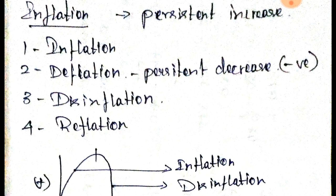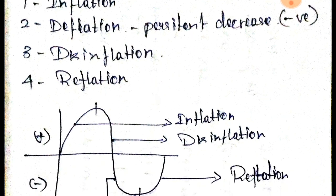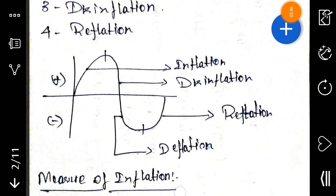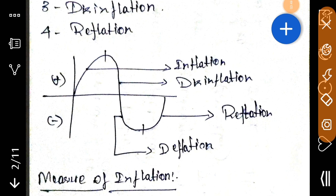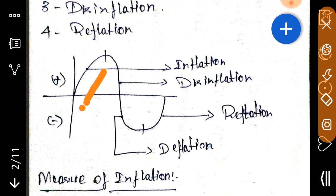This is our inflation economy — inflation and deflation. This is disinflation, and this is reflation. This is disinflation and reflation. This is an example — a diagram that you can see. You can see a diagram in this area. This is increase. This is the plus area and this is the minus area — these are two areas. This is increase in this point. This is inflation — a persistent increase.